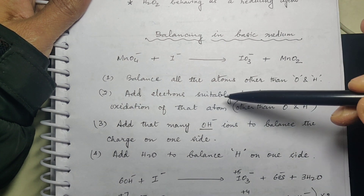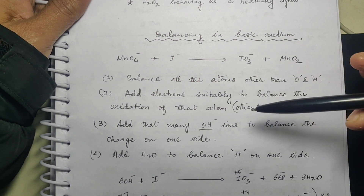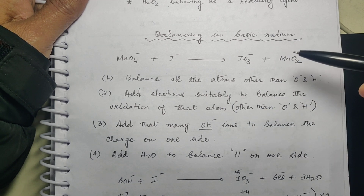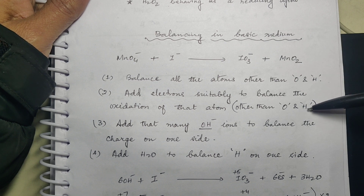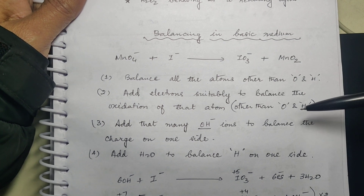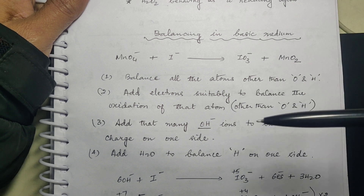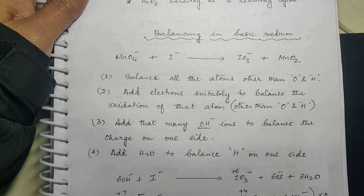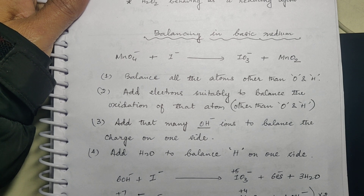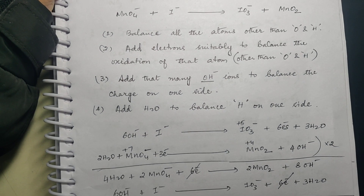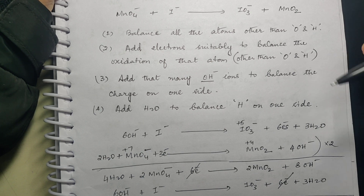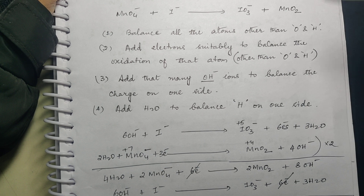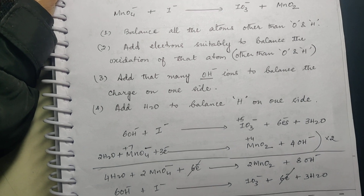The second step is also the same — add electrons suitably to balance the oxidation state of that atom which you have balanced. Whichever atom is there, balance its oxidation state with electrons. Then add that many OH⁻ to balance the charge on one side. Then add water to balance hydrogen on one side.